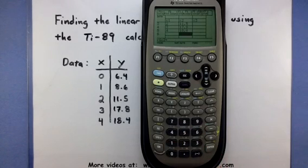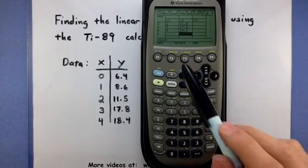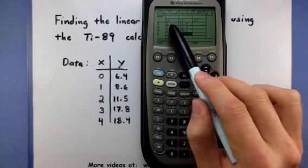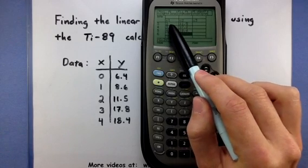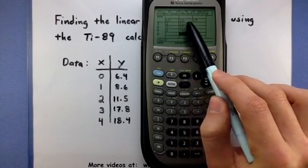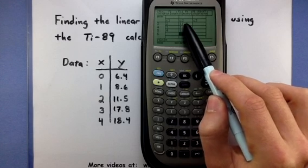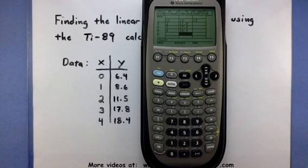So we have all the data entered in. Now take note of this, it will be important later on. At the top of each of these columns is a name. At the top of my columns, it says C1, and on top of the other column, it says C2. This will be important.